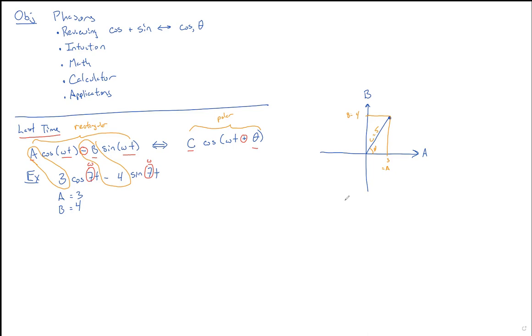And so you can see you can go back and forth between them. Because our C, just by Pythagorean's theorem, is going to be the square root of A squared plus B squared. And our theta is going to be inverse tangent of B over A. And then to that, because there's always a problem with branch cuts, you have to add 180 degrees if your A is negative. So this is how you can go from rectangular form to polar form.